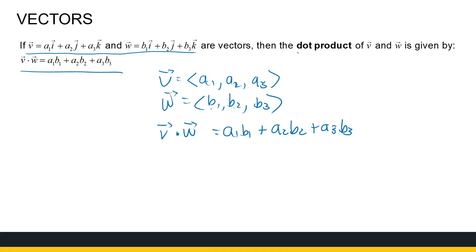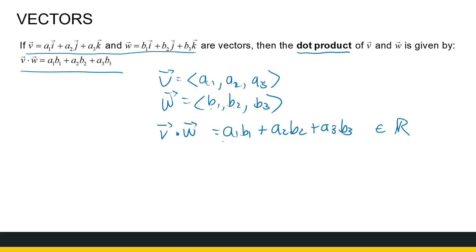First thing to notice — the dot product has a special name, 'dot product,' and not just 'product,' because we're going to define a different type of product between two vectors. Notice that what I end up with here is a real number, because those components are all real numbers. So the dot product of two vectors does not give me a vector — it gives me a real number.